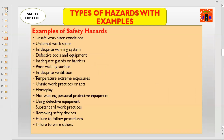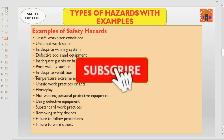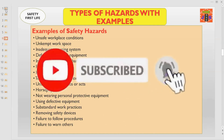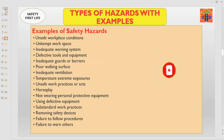Let us clarify safety hazards with multiple examples: number one, unsafe workplace conditions; number two, unkempt working space; number three, inadequate warning system; number four, defective tools and equipment; number five, inadequate guards or barriers; number six, poor walking surfaces; number seven, inadequate ventilation; number eight, temperature extreme exposure; and number nine, unsafe work practices or acts.